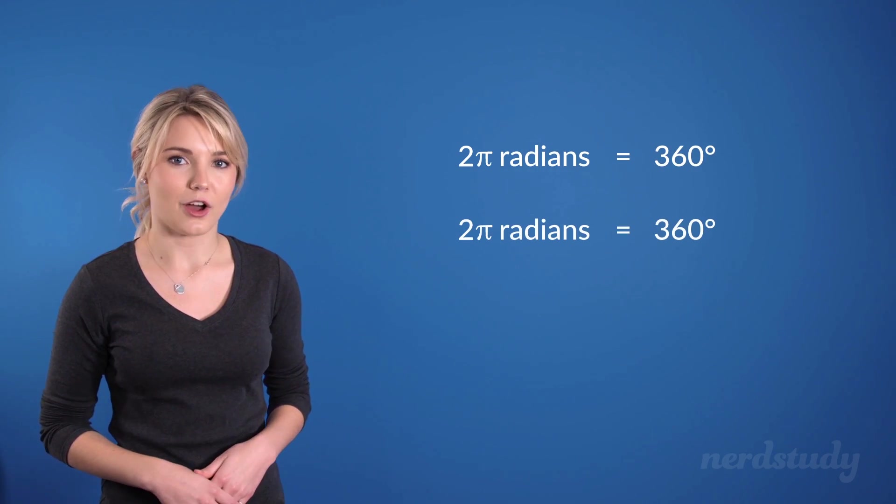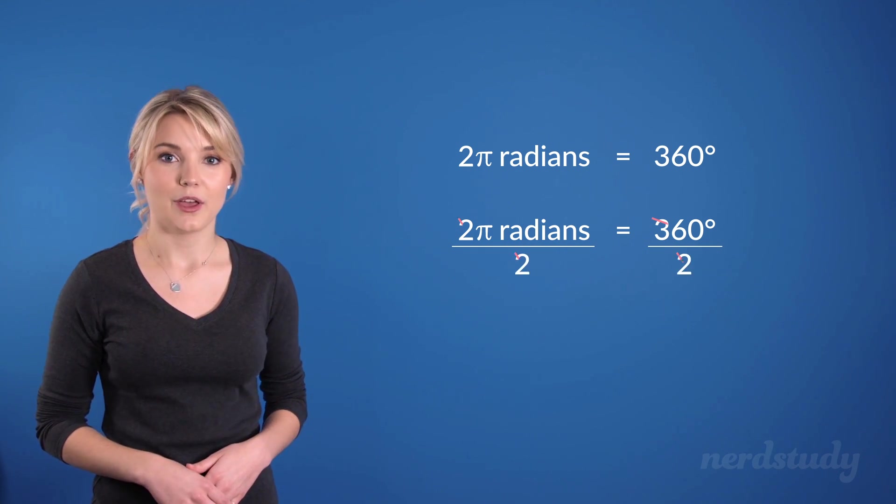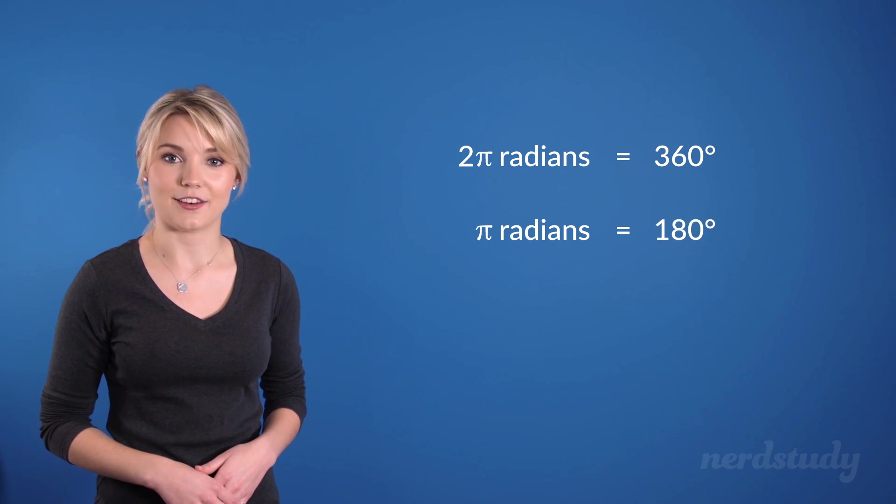Now following the same logic, if we divide both sides by 2, we'd get pi radians is equal to 180 degrees.